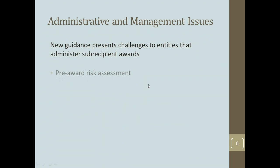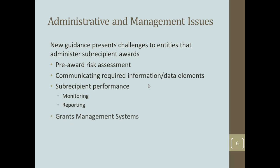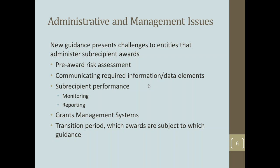Let's talk more about the challenges we'll all face when we try to administer subrecipient awards under the new guidance. Specifically, we're going to look at the pre-award risk assessment, communication of required information and data elements, subrecipient performance including monitoring and reporting, grants management systems, and then the transition period — meaning which awards are subject to which guidance. The risk assessment considerations found in Section 200.205 are new requirements on the federal awarding agencies, and the same requirements will also apply to states when we administer awards to our subrecipients.